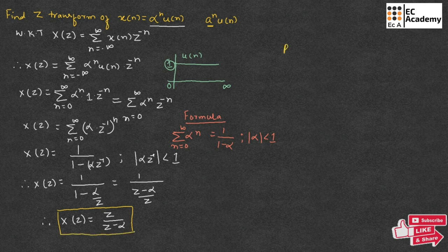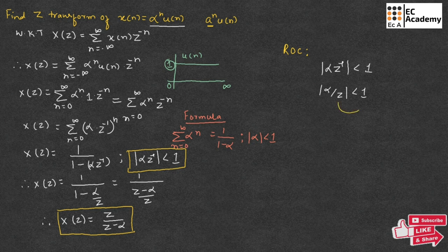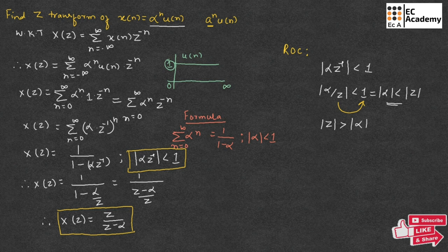Now let us find the region of convergence, ROC. To find ROC, we consider the condition that the magnitude of alpha z^(−1) is less than 1, which means the magnitude of alpha/z is less than 1. Rearranging, the magnitude of alpha should be less than the magnitude of z, so the magnitude of z must be greater than the magnitude of alpha.